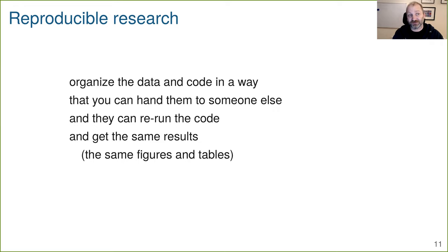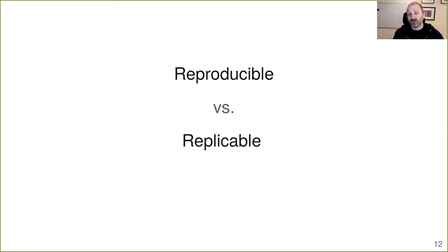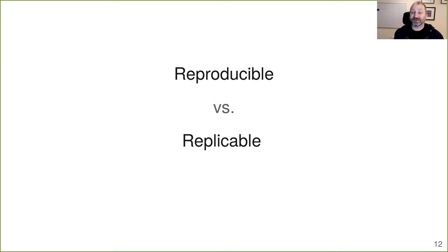Our key goal here is reproducible research — the data and code are organized in a way that you could hand them to someone else and they could rerun the code and get the same results, the same figures and tables. Reproducible should be distinguished from what you might call replicable: imagine rerunning the experiment and getting completely new data — will you get the same answer? Reproducible is really a minimal standard for our computational work: same data, same code, you get the same results. Replicable — if you redo the experiment and get new data, do you still come to the same conclusions? That is a more stringent expectation.